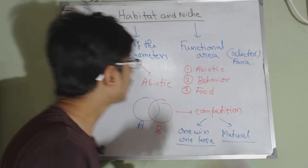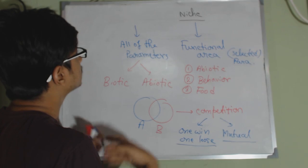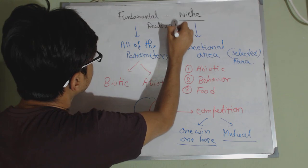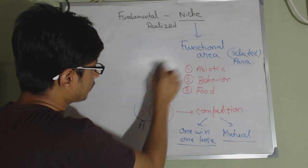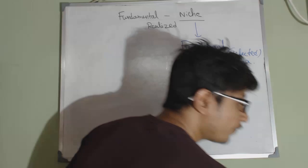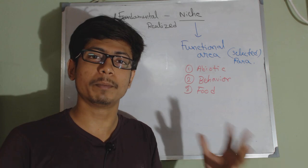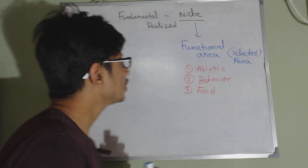The two types of niche are fundamental niche and realized niche. In the concept of fundamental niche and realized niche, we are going to see how organisms compromise some part of their niche so that both organisms can stay together in the same region.